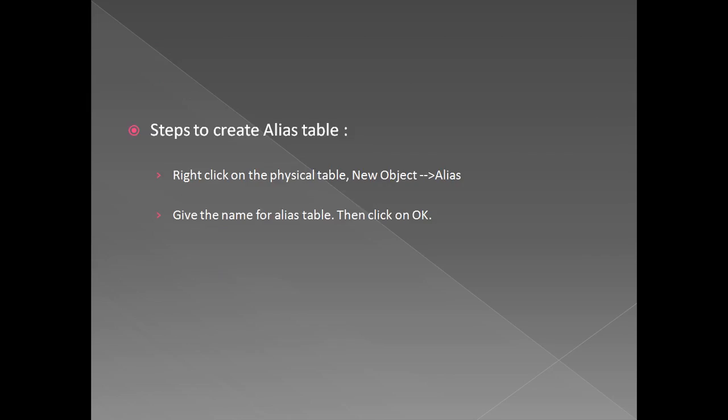Steps to create an alias table: Right click on the physical table, select new object, then alias. Give the name for the alias table, then click on OK.